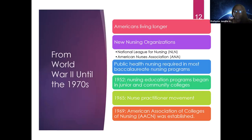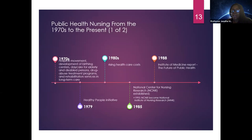From World War II through the 1970s, people started living longer. Nursing associations and similar organizations were designed to help. Public health nursing became a required part of most baccalaureate programs in the 1950s, and continued to evolve from there. In 1970, Healthy People came about as a national strategy proposed to significantly improve the health of Americans.